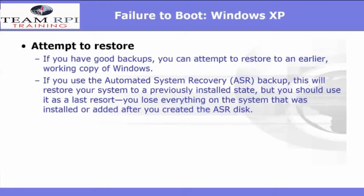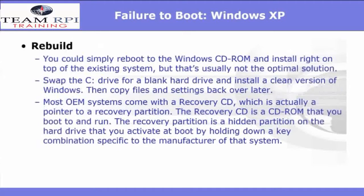If you have good backups available, you can attempt to restore to an earlier working copy of Windows. For instance, if you use the Automated System Recovery or ASR backup, this will restore your system to a previously installed state. But you should only use this as a last resort. You will lose everything on the system that was installed or added after the date you created the ASR disk. And if all else fails, you'll have to rebuild the system. You could simply reboot from the Windows CD-ROM and install right on top of the existing system, but that's usually not an optimal solution. Most OEM systems come with a recovery CD — a CD-ROM that you boot to and run. The recovery partition is a hidden partition on the hard drive that you can activate at boot by holding down a key combination specific to that manufacturer.